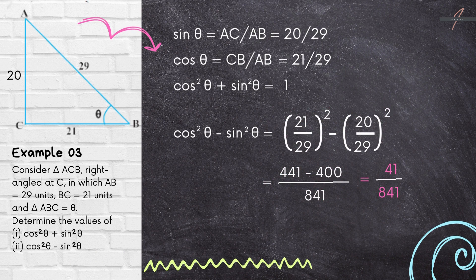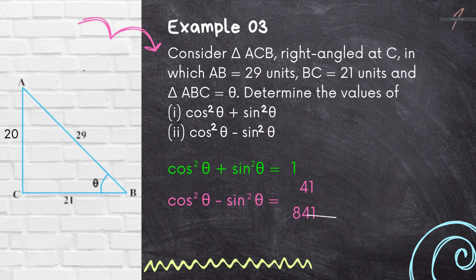Now cos²θ − sin²θ = (21² − 20²)/29² = 41/841.